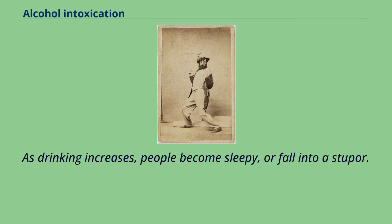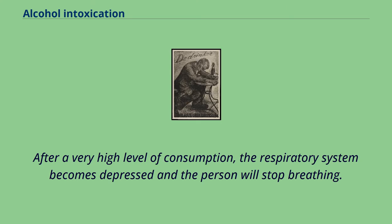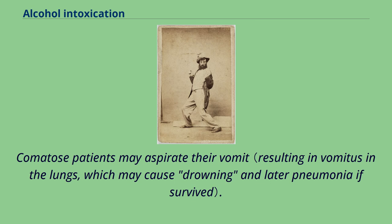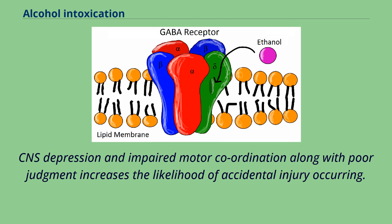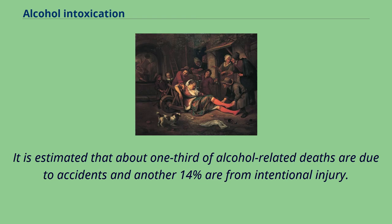As drinking increases, people become sleepy or fall into a stupor. After a very high level of consumption, the respiratory system becomes depressed and the person will stop breathing. Comatose patients may aspirate their vomit. CNS depression and impaired motor coordination along with poor judgment increases the likelihood of accidental injury occurring. It is estimated that about one-third of alcohol-related deaths are due to accidents and another 14% are from intentional injury.